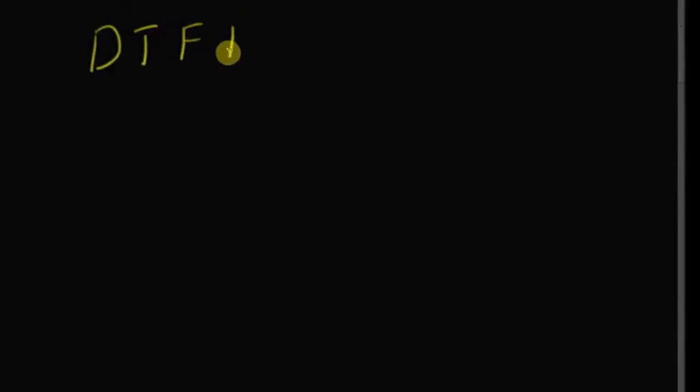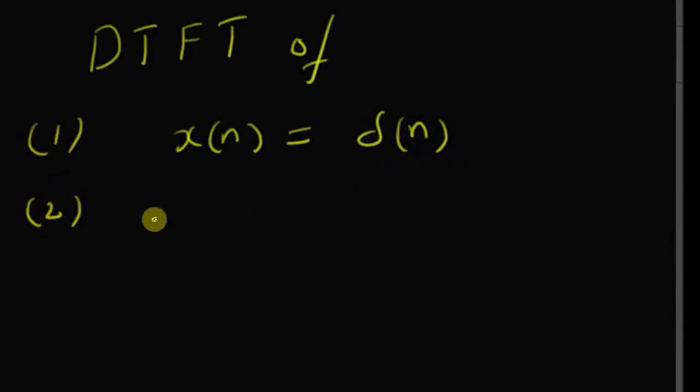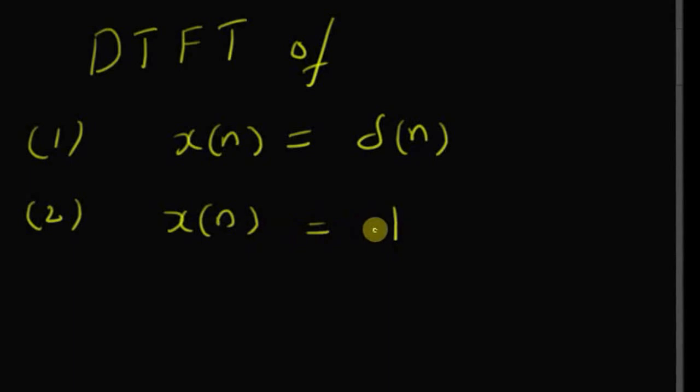Hello, welcome. In this short video, let us look at the discrete time Fourier transforms of the unit impulse and the constant one. We are going to look at the DTFT of x(n) = δ(n), that is the unit impulse, as the first one, and the DTFT of x(n) = 1, that is the constant one, as the second one.